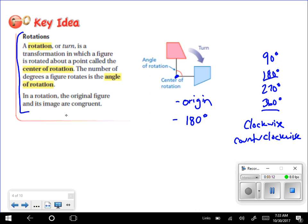So in a rotation, the original figure and its image are going to be congruent. You're not making it bigger or smaller. You're just turning it.